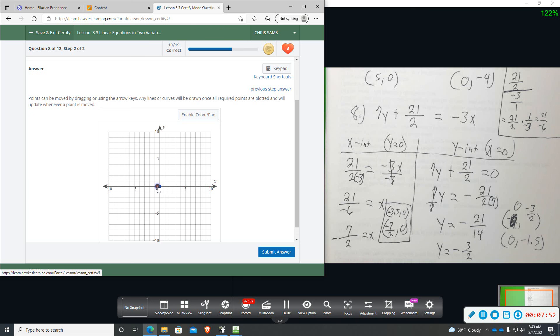So I'm going to go left 1, 2, 3, and then halfway in the middle. And then the y value is going to be down 1.5. So down 1, and then a half.